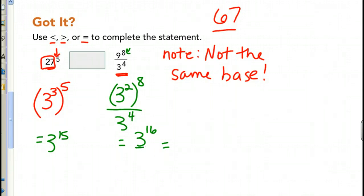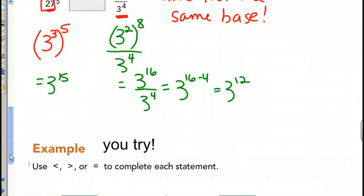Which actually equals 3 to the 16 minus 4, which is 3 to the 12th. So, which one is larger? We have to compare 3 to the 15th or 3 to the 12th. Well, in this one we can just straight compare the exponents. We know 15 is larger than 12.